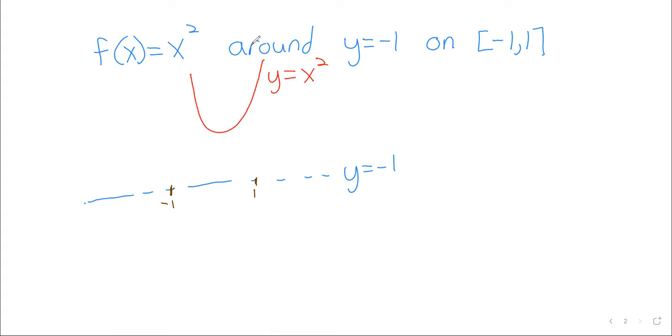Here's the line y equals negative 1. Here's the curve y equals x squared on this interval from negative 1 to positive 1. The trick of these problems, aside from the integration, is simply to find the radius. We need the distance from that line to the curve.